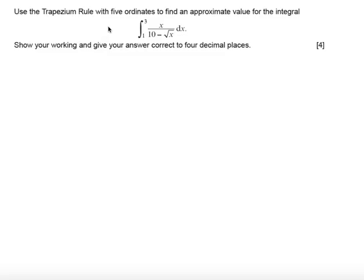In this question we're asked to use the trapezium rule with five ordinates to approximate the integral from 1 to 3 of x over (10 minus square root of x) dx. Show your working and give your answer correct to four decimal places. First thing to notice is that we are asked to use five ordinates.